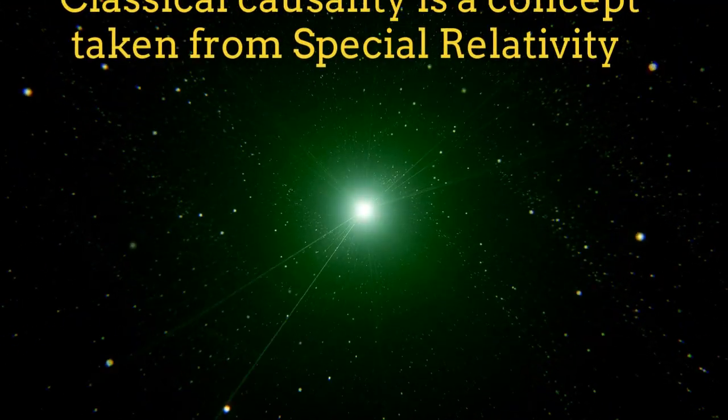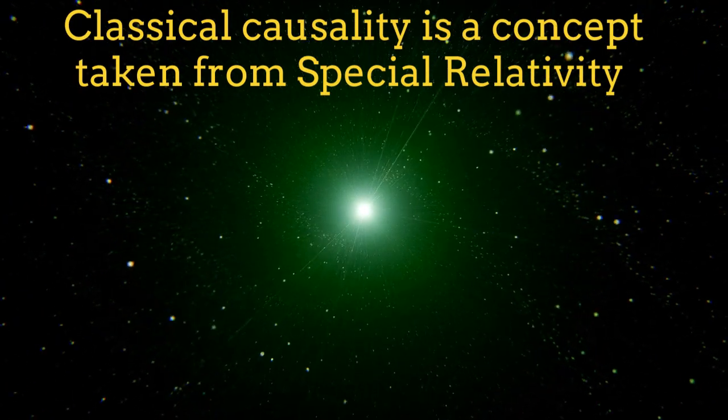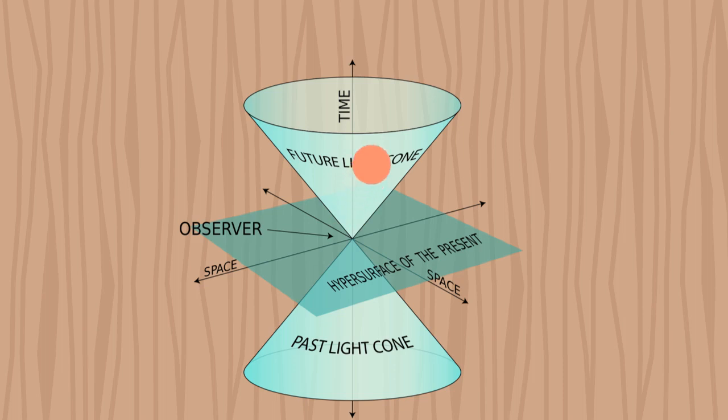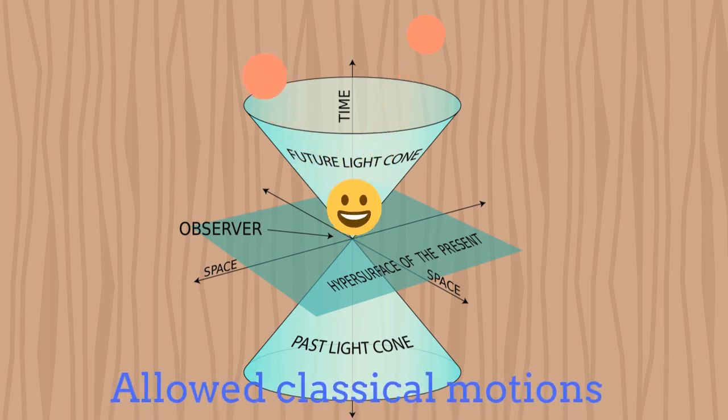Classical causality is a concept taken from special relativity. In special relativity, nothing can travel faster than light. Inside a Minkowski diagram, this means that an object or particle always moves inside the causality cone, as illustrated in the figure.